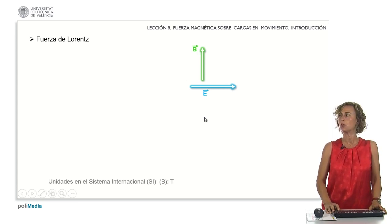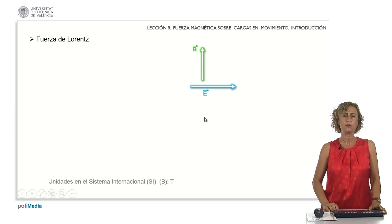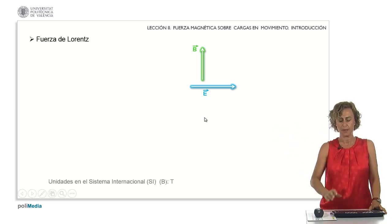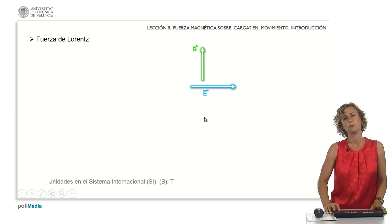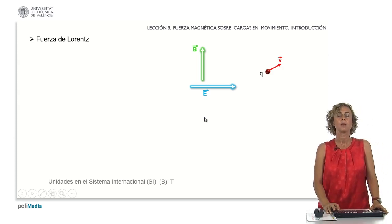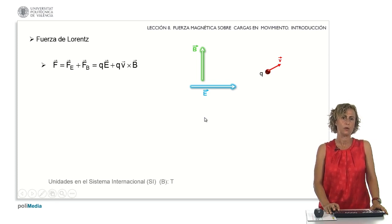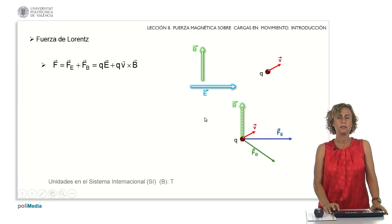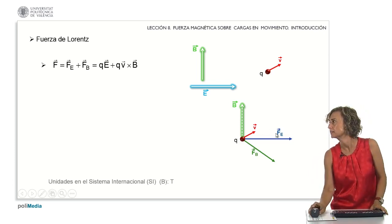The electric field is horizontal, directed to the right, while the magnetic field is vertical, directed upwards. Within this region where these two fields are present, there's a charged particle moving at velocity v. Experimentally, it's demonstrated that this charged particle will experience a force defined by the Lorentz force. There are two terms: an electric force term and a magnetic force term.